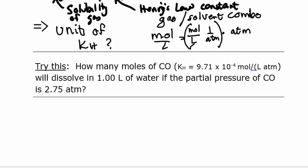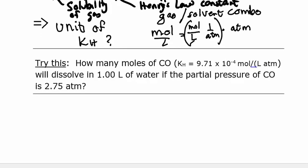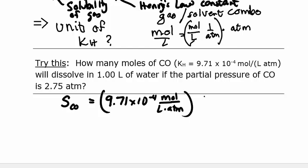And we will use the equation given above for the solubility. We're looking for the solubility because we're looking how many moles will dissolve. So the solubility of CO is going to equal the Henry's Law constant, which is given 9.71 times 10 to the minus 4 moles per liter atmosphere. And that's times the partial pressure, which is 2.75 atmospheres.